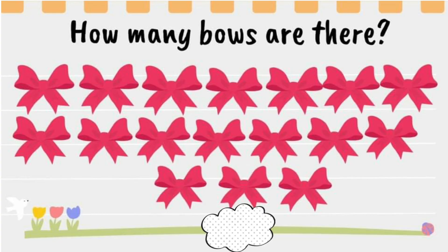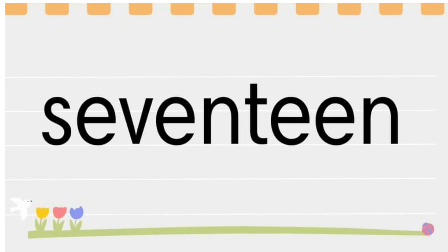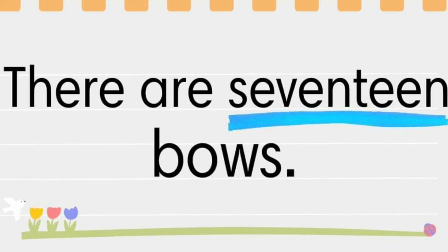Next, how many bows are there? Students, let's count. 1, 2, 3, 4, 5, 6, 7, 8, 9, 10, 11, 12, 13, 14, 15, 16, 17. 17 bows. Let's spell 17. S-E-V-E-N-T-E-E-N, 17. There are 17 bows.